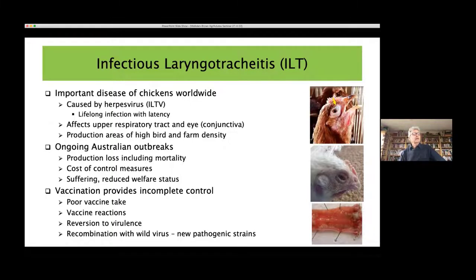Vaccination done in broilers in the face of outbreaks provides an incomplete control method. Because of the numbers of birds you have to use mass vaccination procedures, and water-based vaccination is the standard in Australia. This can be associated with poor vaccine take, vaccine reactions, and the virus moving between birds causing marked clinical signs. Published studies overseas have shown reversion to virulence as the attenuated live vaccine virus moves through chickens. In Australia specifically, we've had recombination of vaccine virus with wild type virus producing new pathogenic strains that cause new outbreaks.